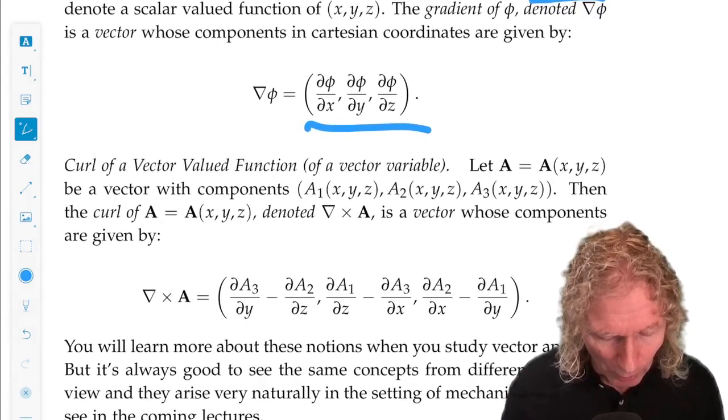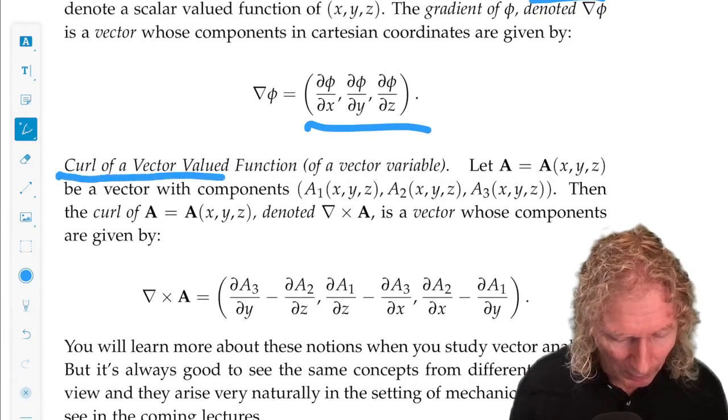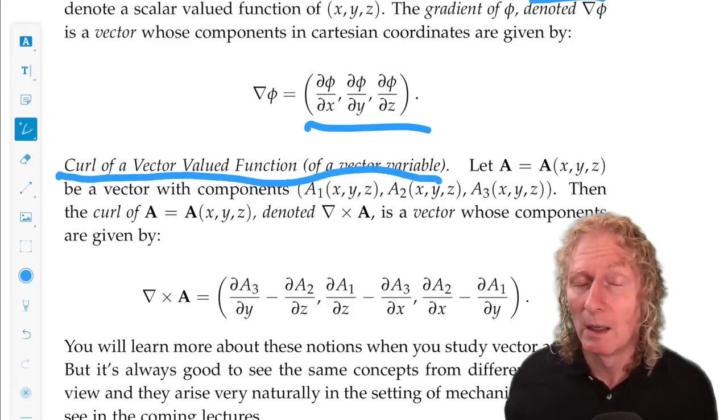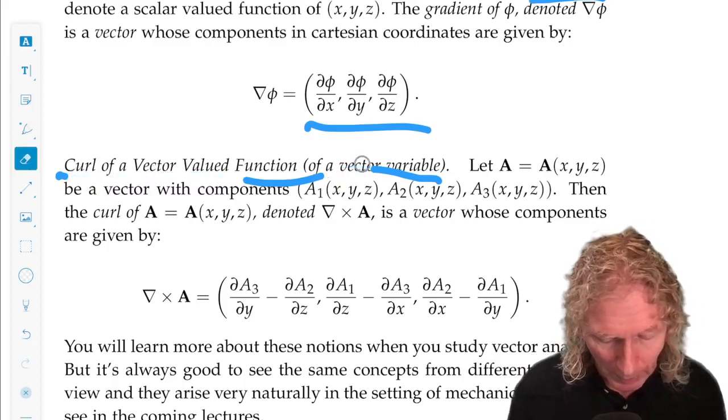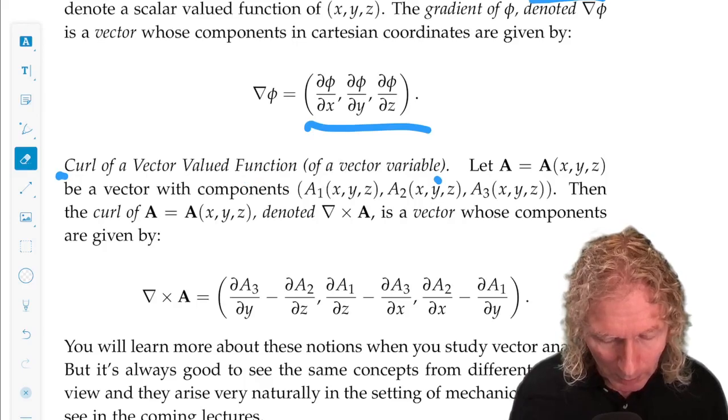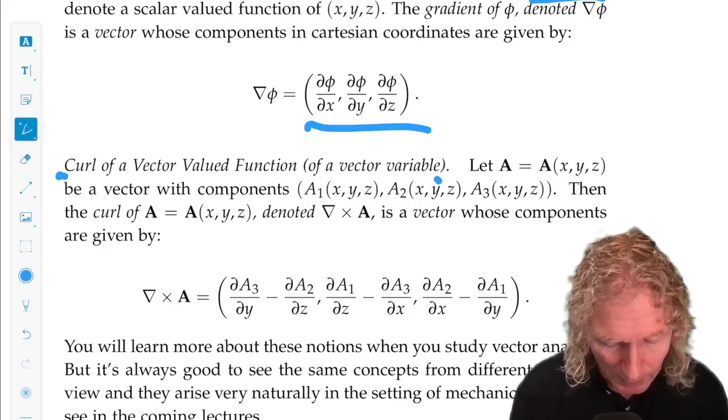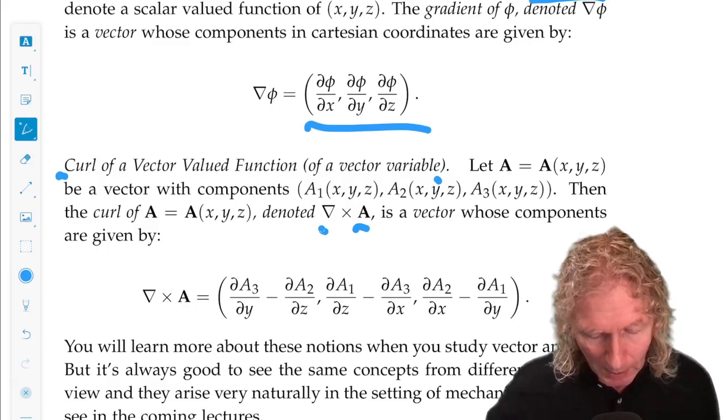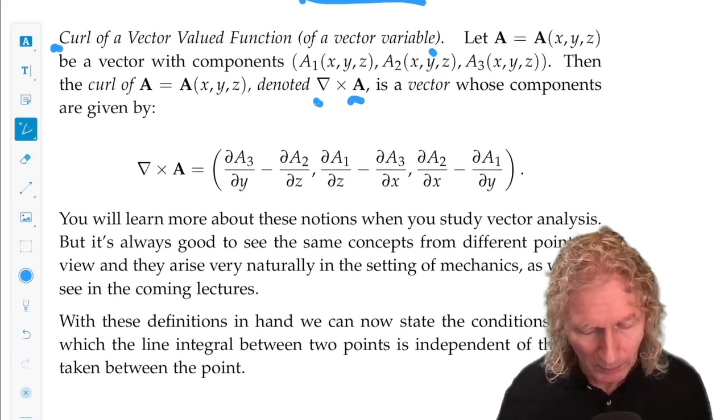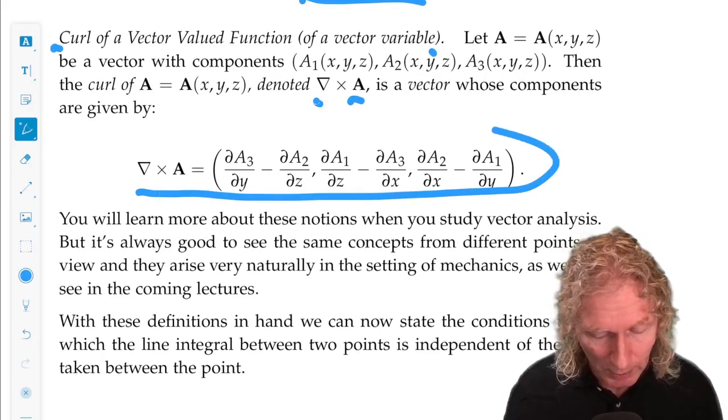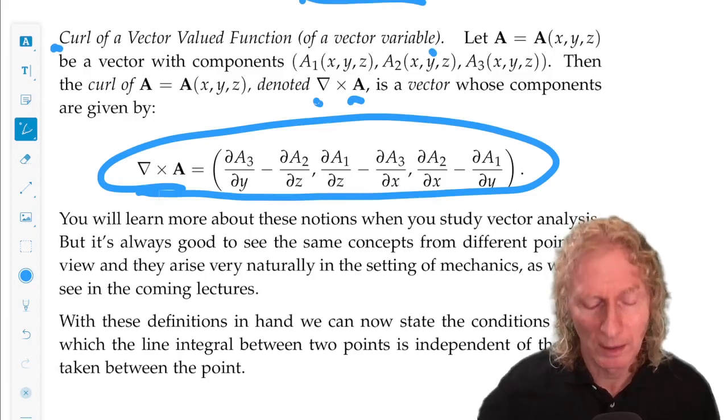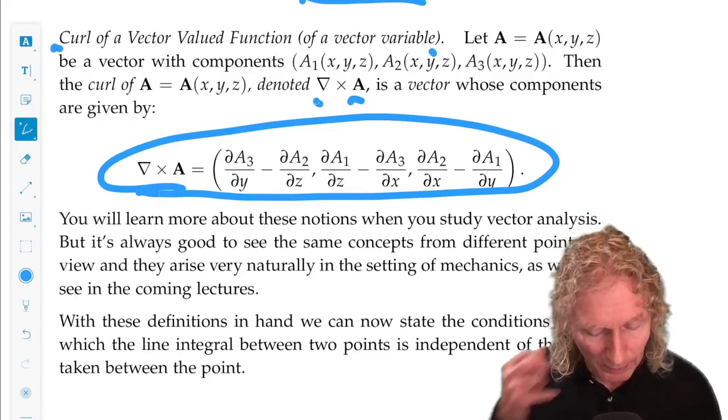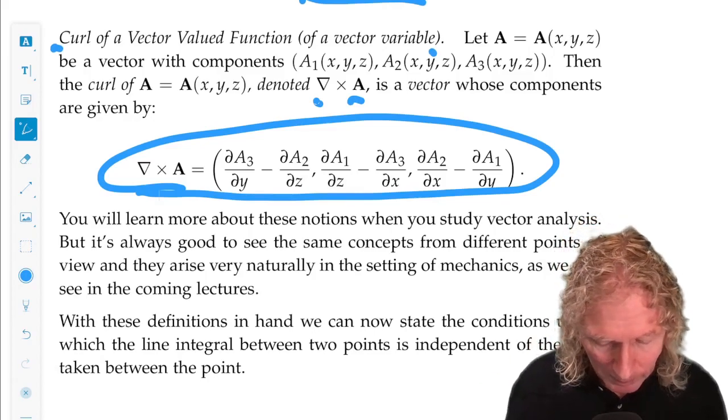Now, the curl of a vector field, now this seems a bit bizarre, first time you've ever seen it, of a vector variable. We call that the gradient symbol, nabla cross A, and that's given by this vector expression here. All right, that looks like I've just pulled it out of the air. I haven't, but it seems that way for now.